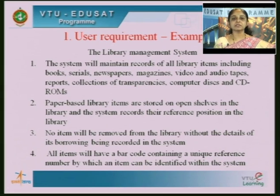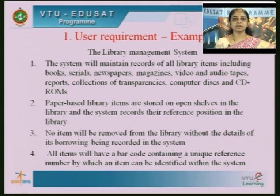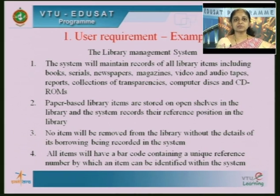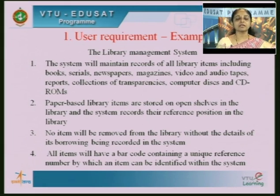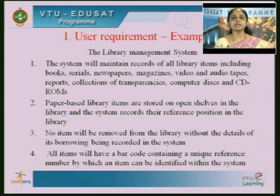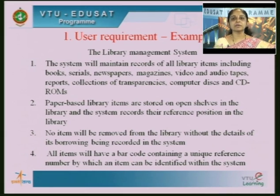Paper-based library items such as books and magazines are stored on open shelves, and the system has to maintain the reference to where a certain book is placed in the library. The system should maintain a record of the position of a certain paper-based item. No item will be removed from the library without the details of its borrowing being recorded in the system. The system should maintain records of all items coming in and going out of the library.